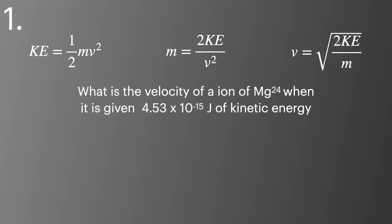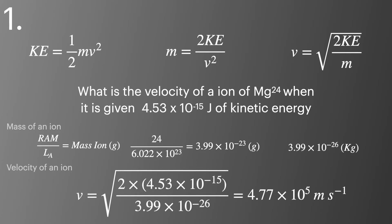We'll look at an example calculation where we're asked to calculate the velocity of an ion of magnesium 24 when it's given 4.53 times 10 to the minus 15 joules of kinetic energy. First we'll calculate the mass of a single ion by doing the relative atomic mass divided by Avogadro's constant, and then we'll convert to kilograms for use in the kinetic energy equation. Once we have that we'll take the correct arrangement of the kinetic energy formula to calculate the velocity of the ion as 4.77 times 10 to the power of 5 meters per second.